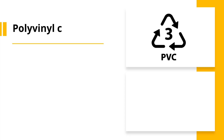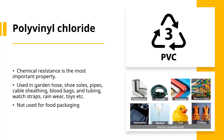Number 3 is given to polyvinyl chloride. This number is found in plastic products where chemical resistance is the most important property. For example, garden hose, shoe soles, rain wear, cable sheathing, blood bags and tubing. PVC is also being used in the packaging industry, but it is not at all suitable for food packaging due to additives present in it which make it flexible.